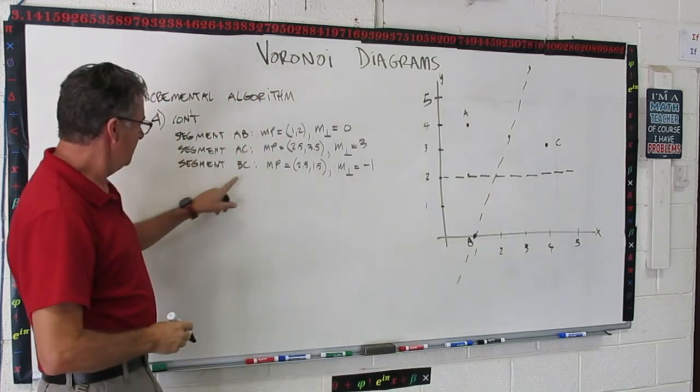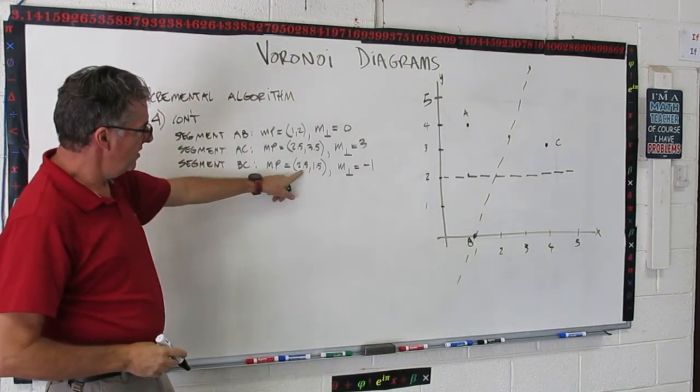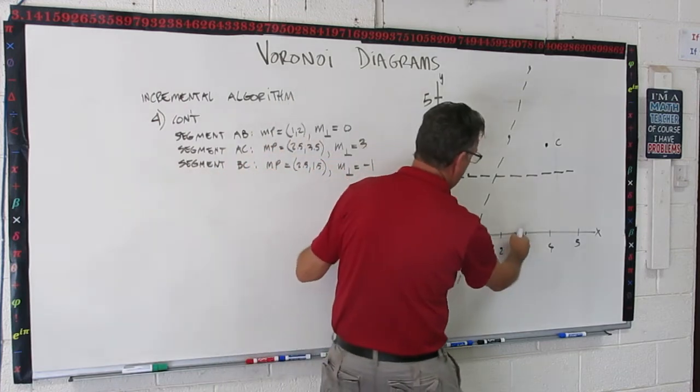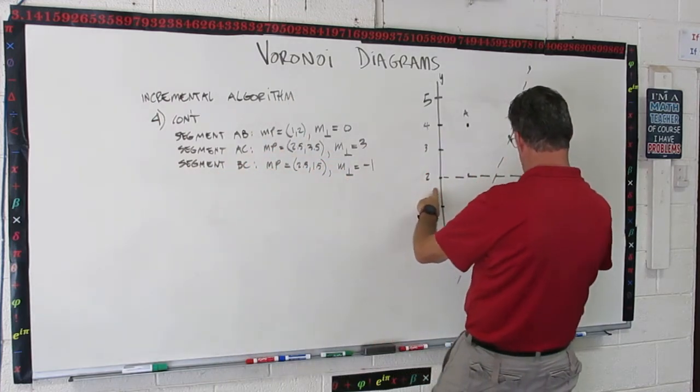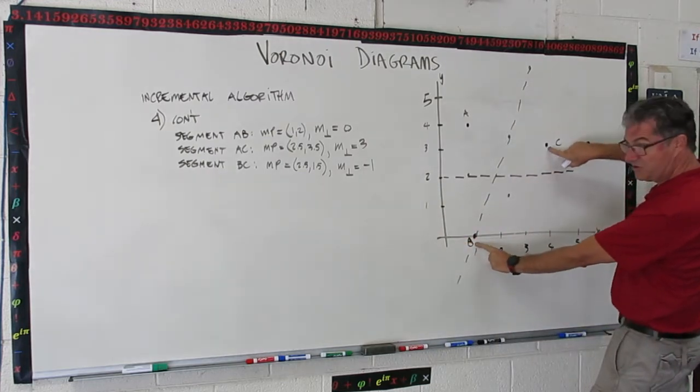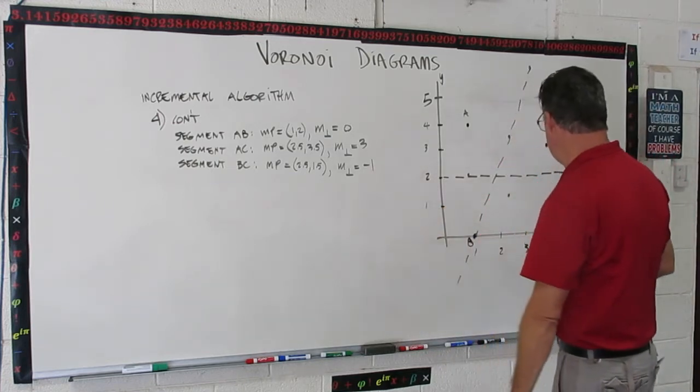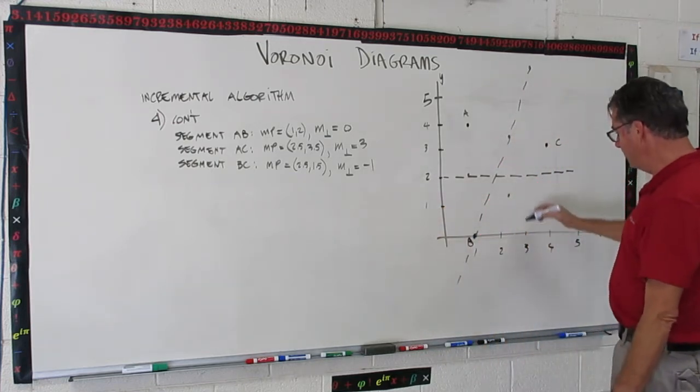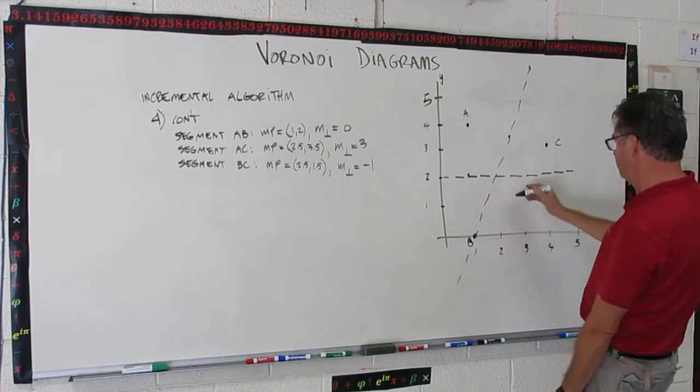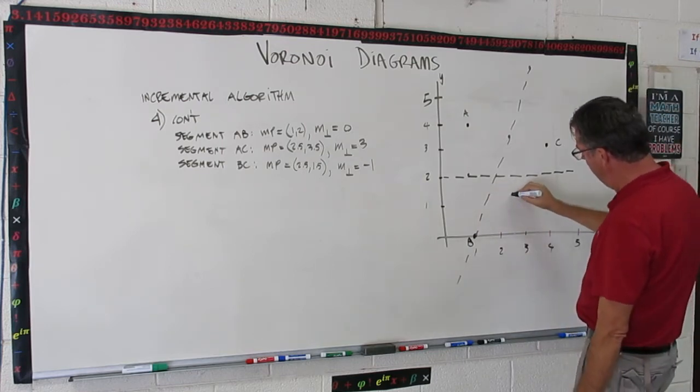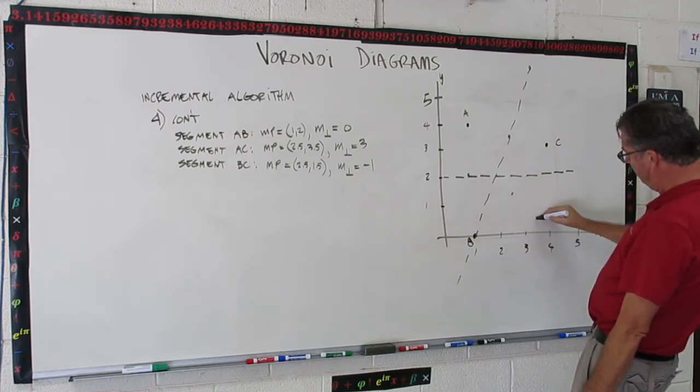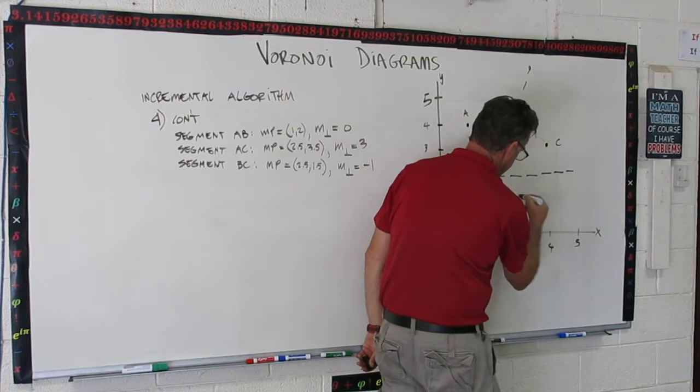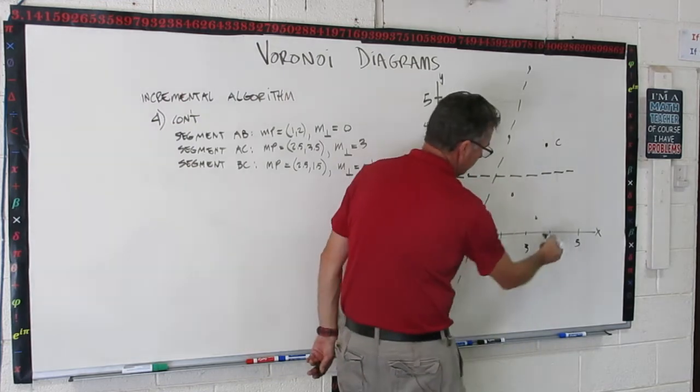And then the last one, BC, the midpoint is 2.5, 1.5. So 2.5, that's right about there. And that looks good. That's about halfway between these two and on the line that connects them. And now our slope on this one is negative one. So that means we just go down one over one. And that 2.5 is really right about there. So down one is to 1.5, over one is to 3.5. So we're going to do about like that. So this line goes through these two points. Okay.